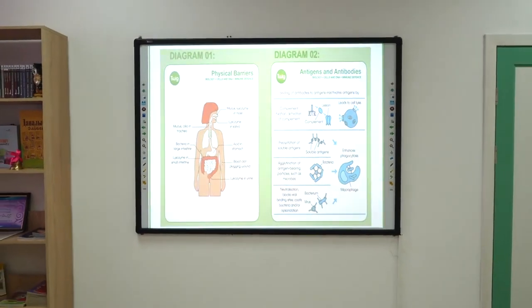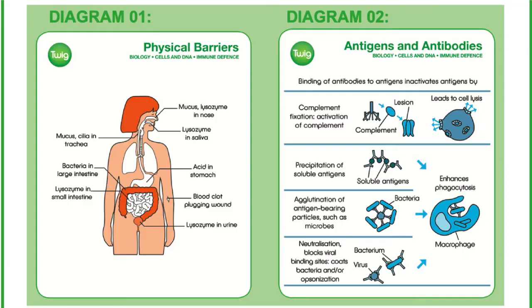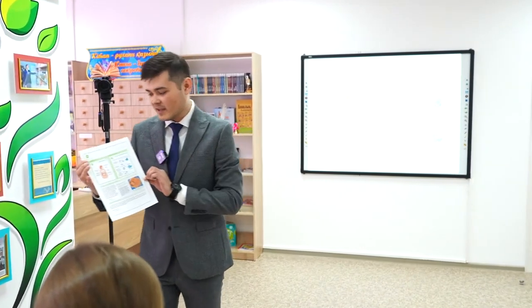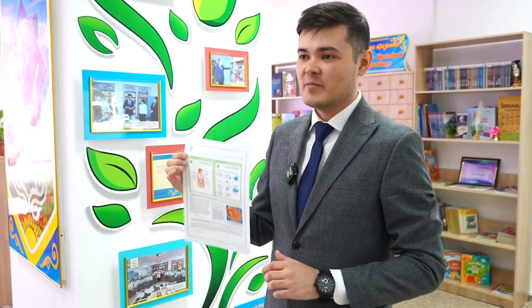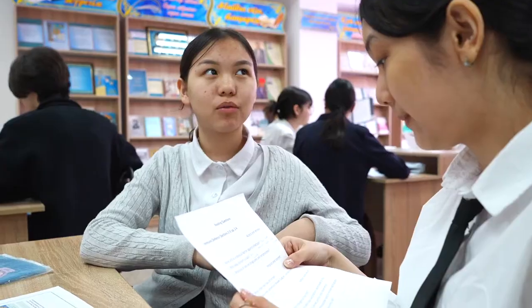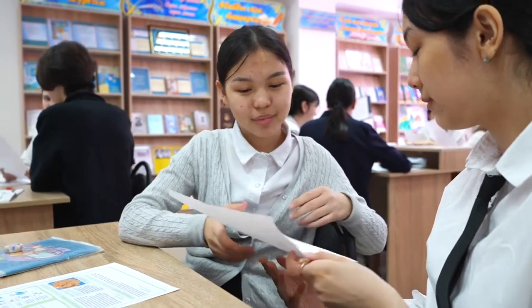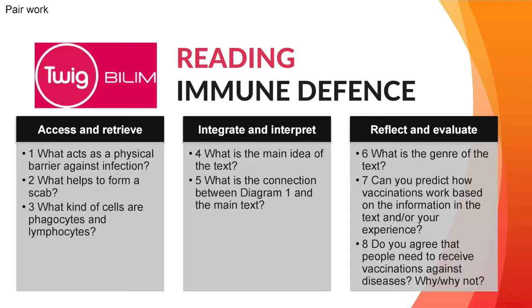Let's move on to the main part of our lesson. We are going to read the text, which is based on the short film that we watched from Twigblom, and it is called immune defense and its physical barriers. So now in pairs, we need to read the text and answer eight questions. The questions are aimed at developing three major reading competences: access and retrieve, integrate and interpret, and reflect and evaluate.